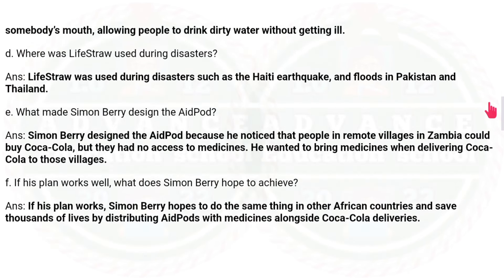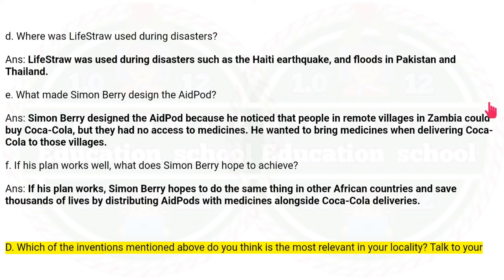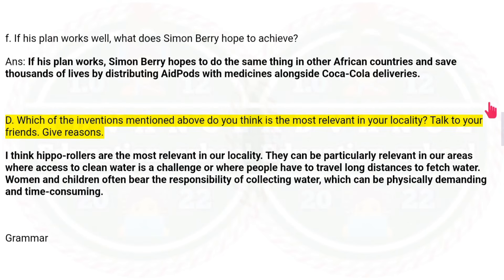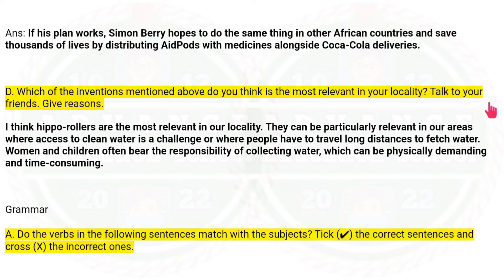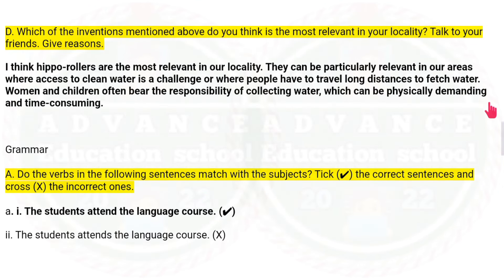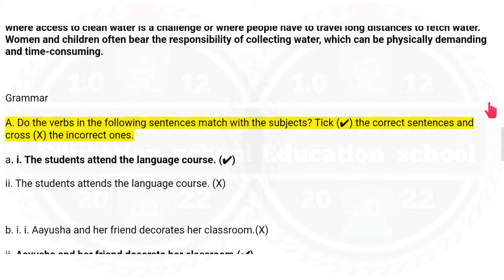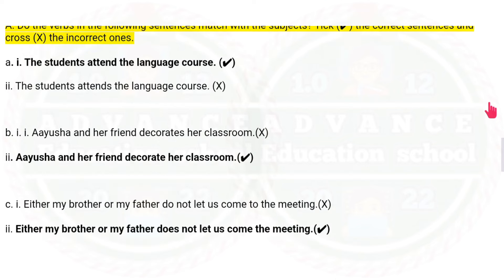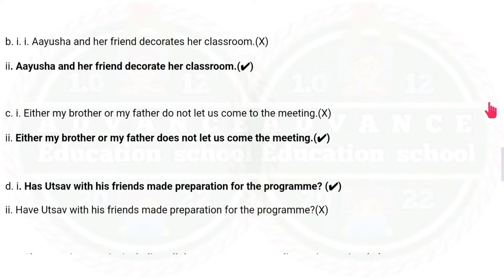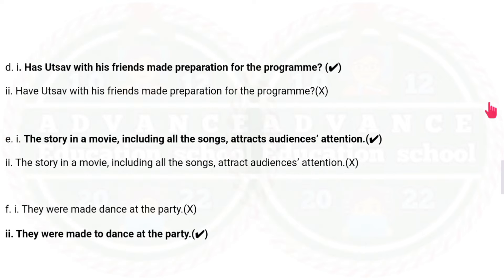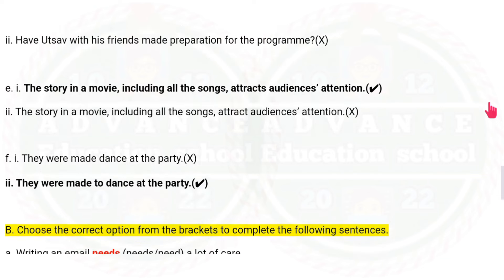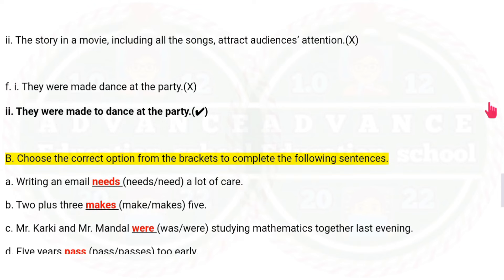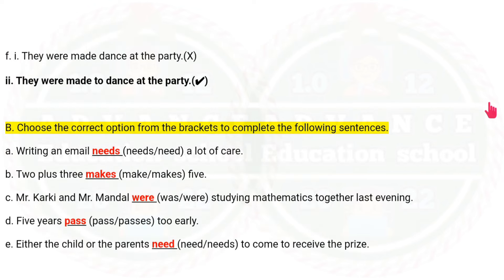You can write here for section D as well. You can stop the video and write. Grammar — you can write tick and cross for your answers. Questions can also be easily found here. For section B, choose the correct option from the brackets to complete the following sentences. You can write here.